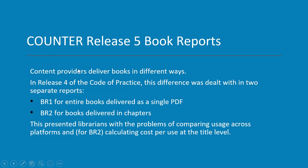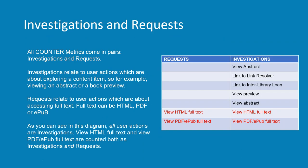I'm going to kick off by talking about the new metrics in Release 5, and then we'll look at some examples of how they play out in terms of user actions and what you see in the reports. The first thing to note about the counter metrics is that they come in pairs: investigations and requests. Investigations relate to user actions which are about exploring a content item — for example, a user viewing an abstract or looking at a book preview.